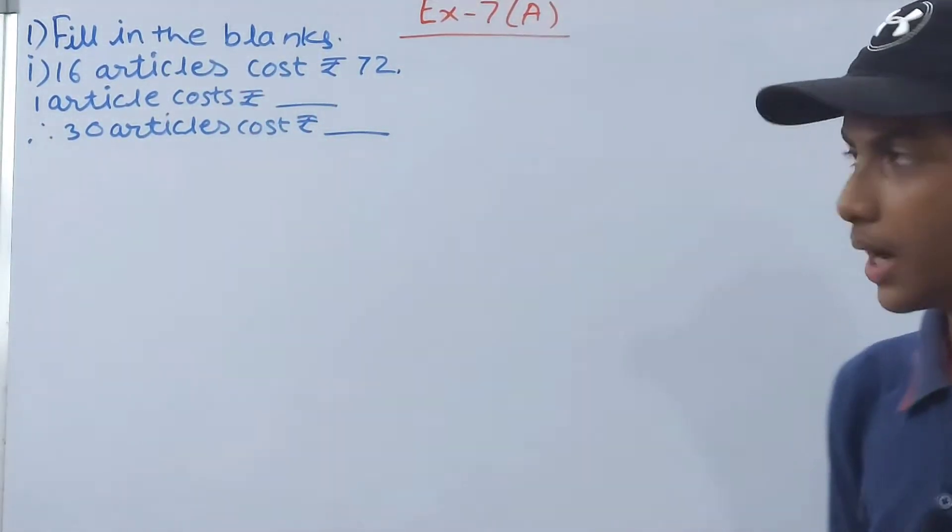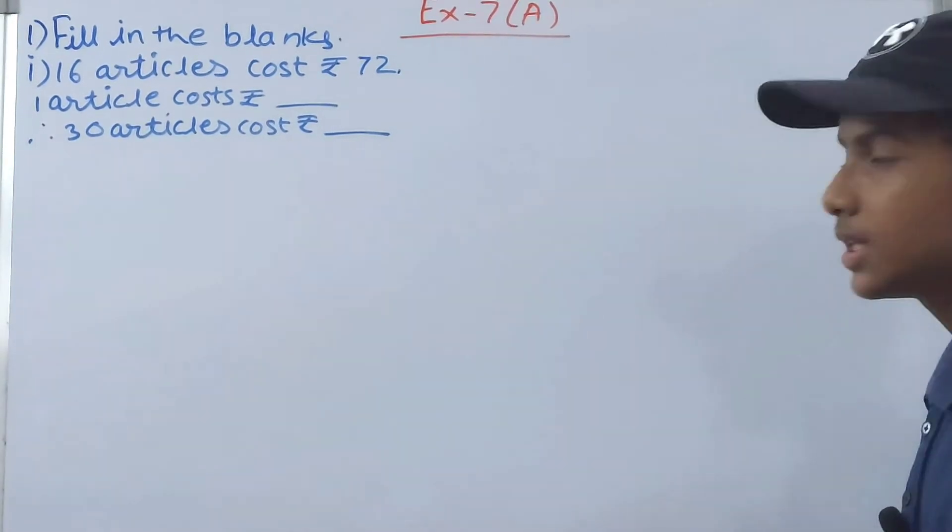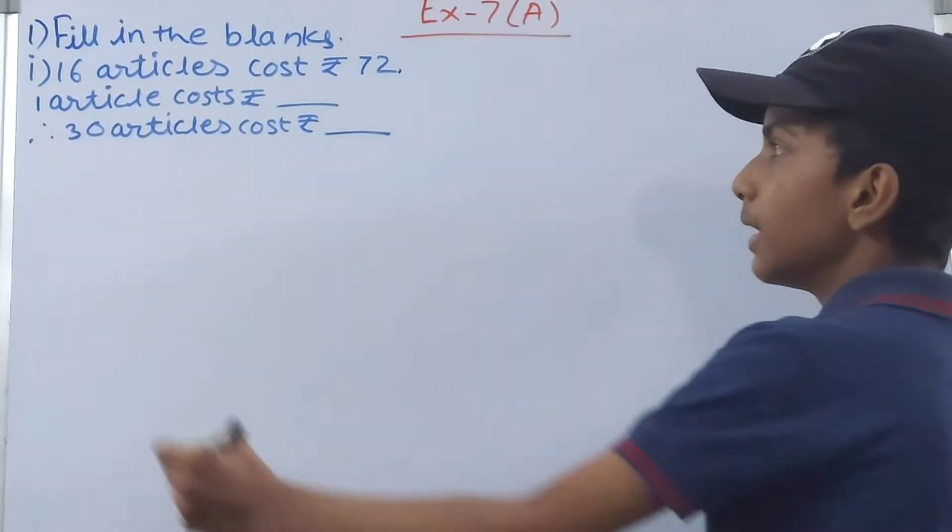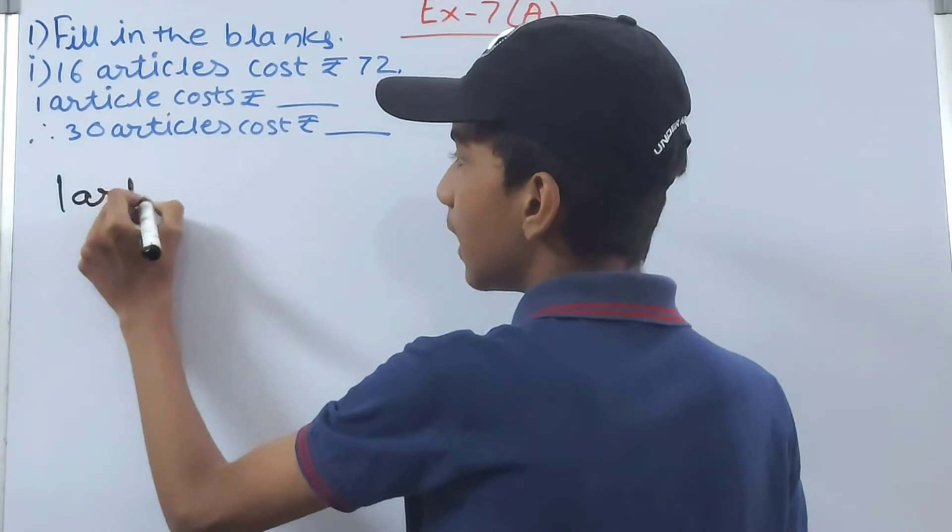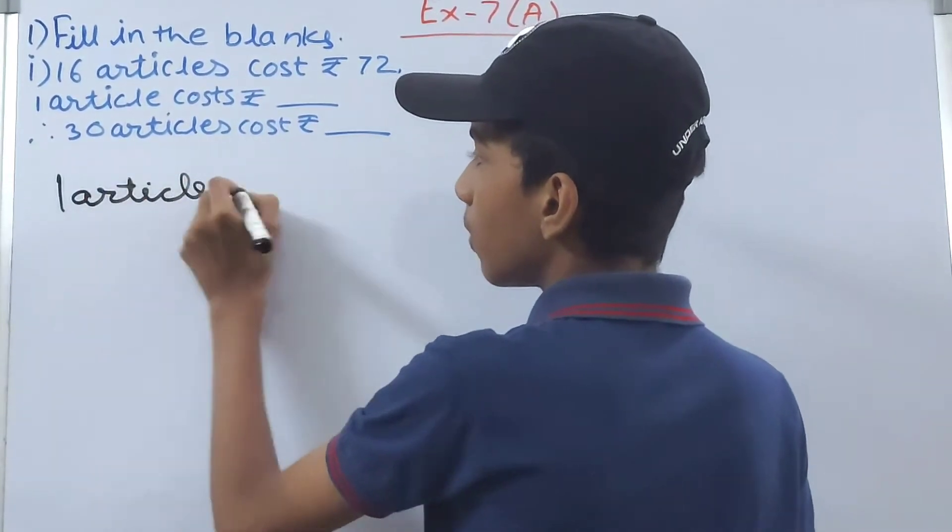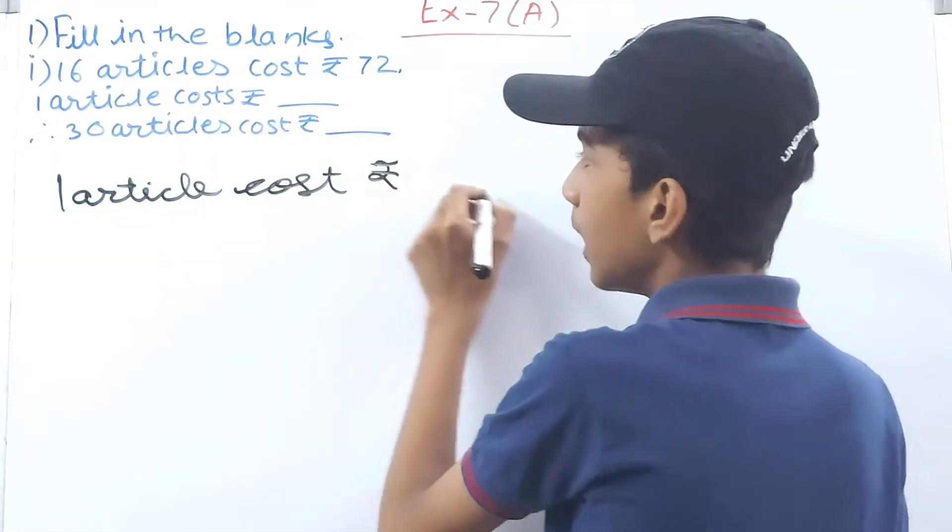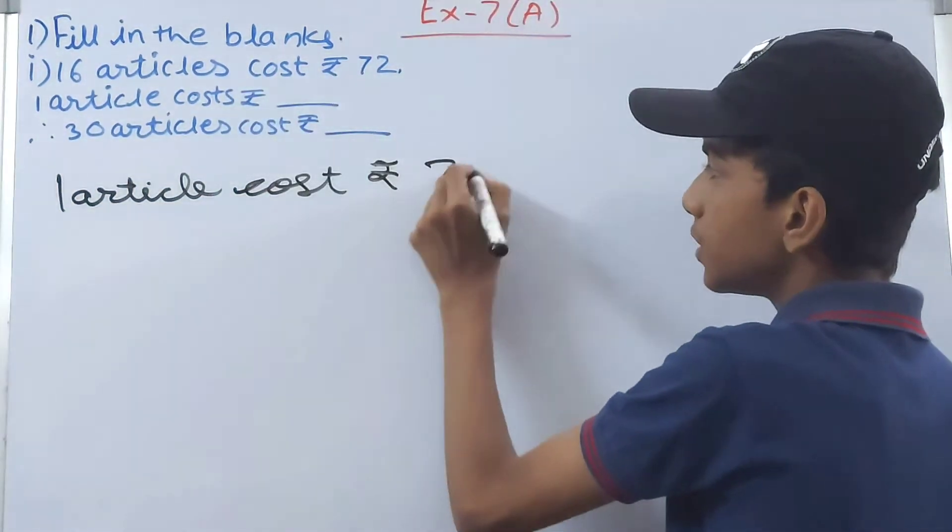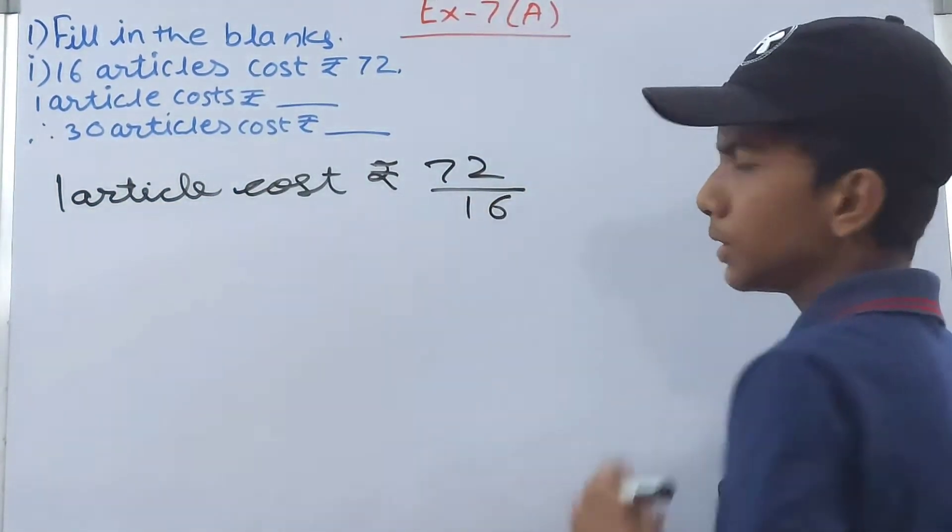Simply what we will do is we will do division. So you write here that one article costs rupees 72 upon 16.